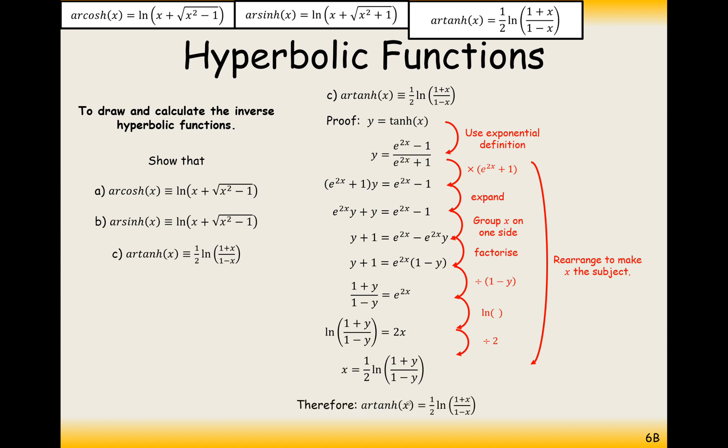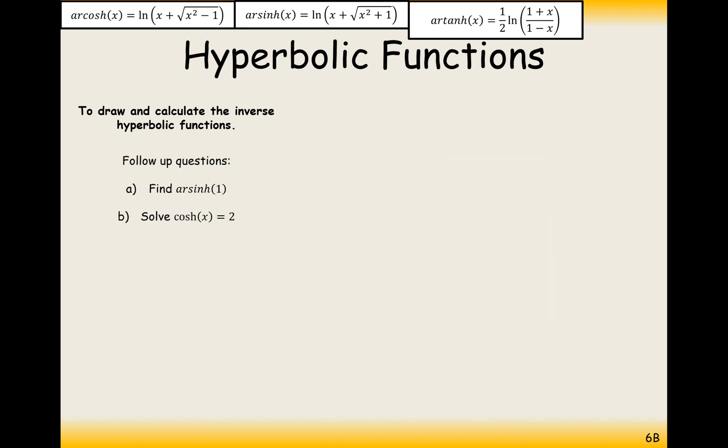So therefore, artanh of x is equal to a half ln 1 plus x over 1 minus x. So there we are, all three of those you get in the formula booklet. And now let's have a go at using them. So part A is find arcosh of 1. So that's just a case of taking the formula, plugging the number 1 in. So you get ln 1 plus root 2. And in part B, solve cosh x equals 2.